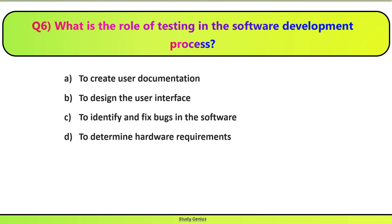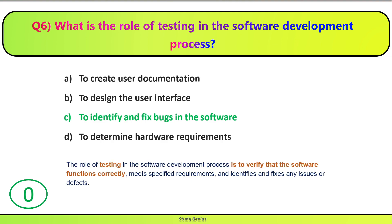Question 6. What is the role of testing in the software development process? Testing ka kya rol hai software development mein? Correct answer is C. To identify and fix bugs in the software. The role of testing is to verify that the software functions correctly, meets specified requirements, and identifies and fixes any issues or defects.